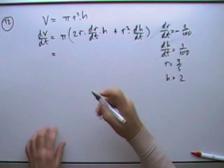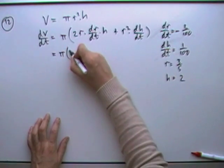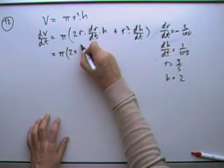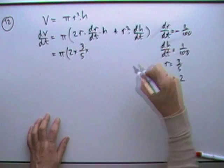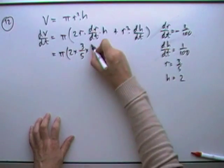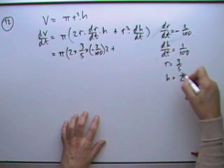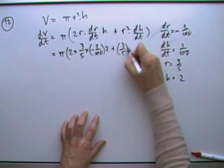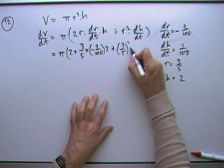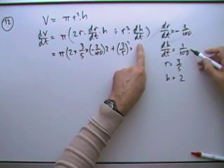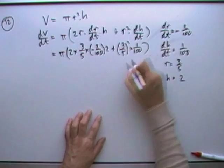So it's just a case of putting that lot in. So we've got π times 2 times - R is three-fifths, the rate of change of R was negative two-hundredths, H was 2. R was three-fifths, I'll have to square it. And the rate of change of H was one-hundredth. That's my expression.